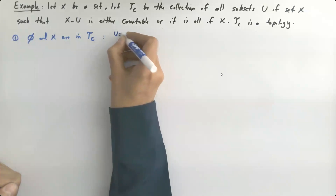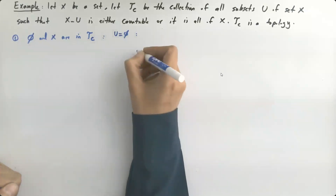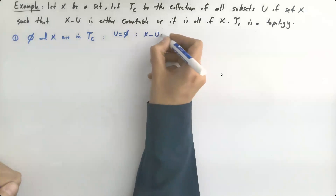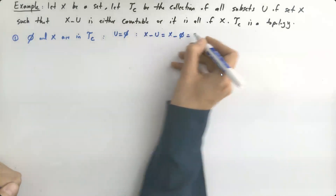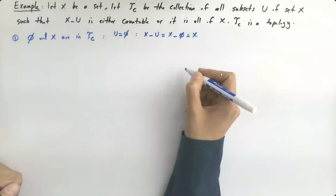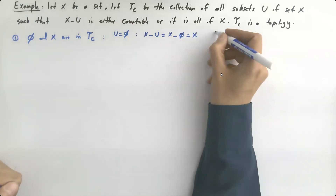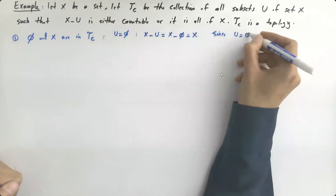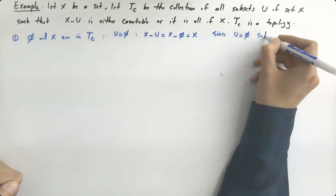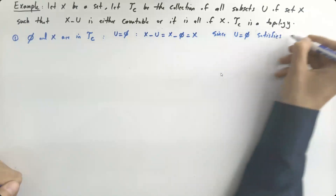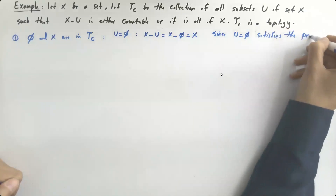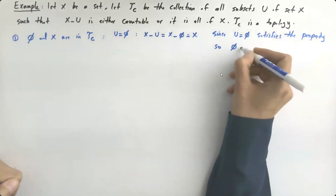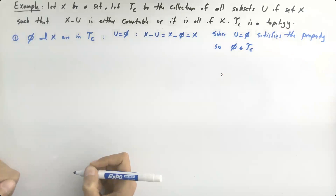Let U be the empty set. Then X minus U is X minus the empty set, which is X itself — it's all of X. So since U equals the empty set satisfies the property, the empty set belongs to τ_C.